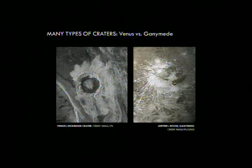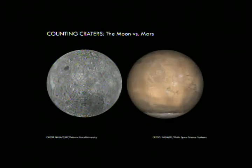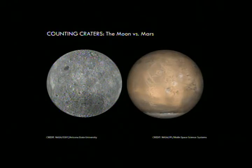We also see different types of ejecta blanket shapes, from Venus on the left-hand side to the ray crater on Ganymede's surface. The size and shapes of the ejecta and impact features can tell us so much about a planetary body. Counting craters is a very important tool that scientists use to determine the age of a planetary surface. On the right side we have the Moon with lots and lots of circles; on the left side Mars has a much smoother texture. That's going to tell us something about the history of those two surfaces.